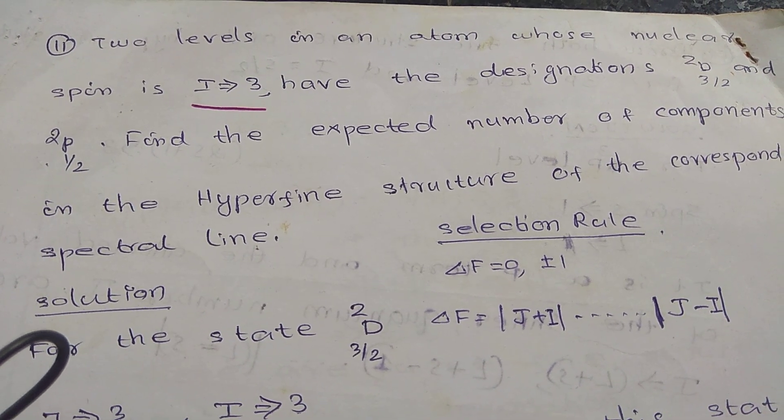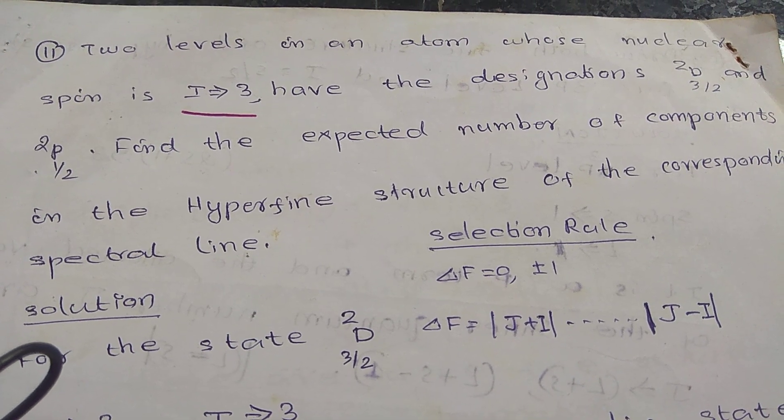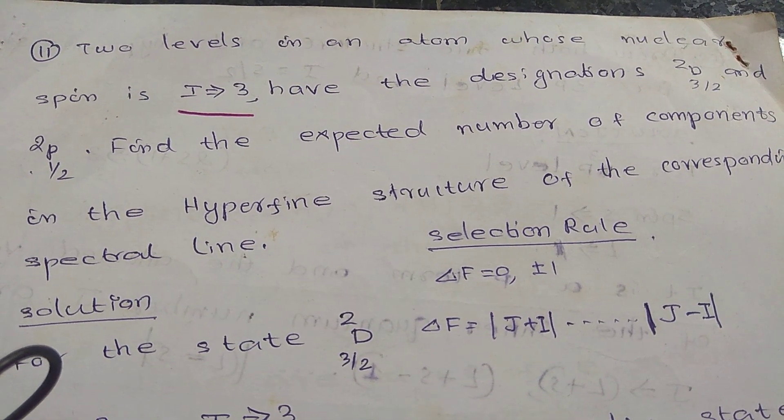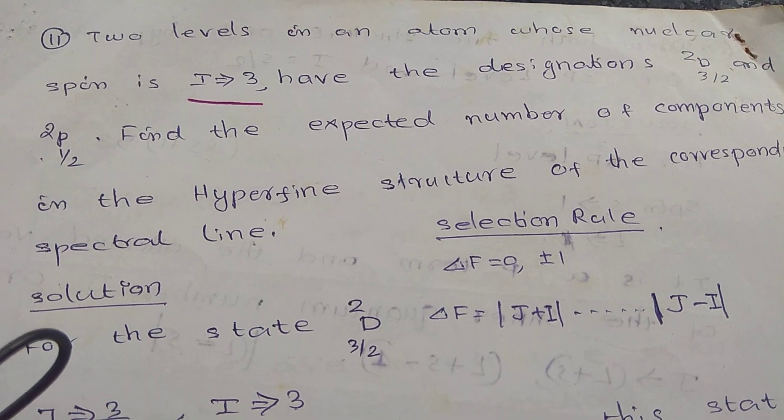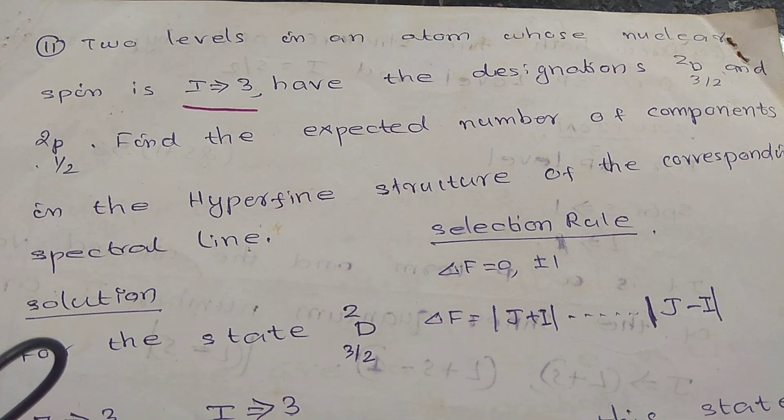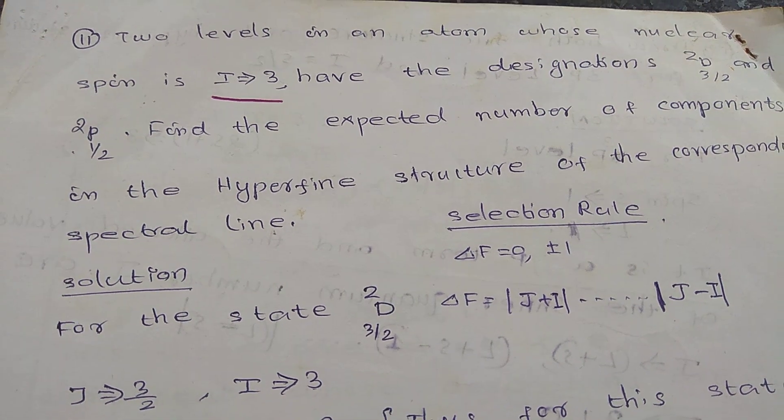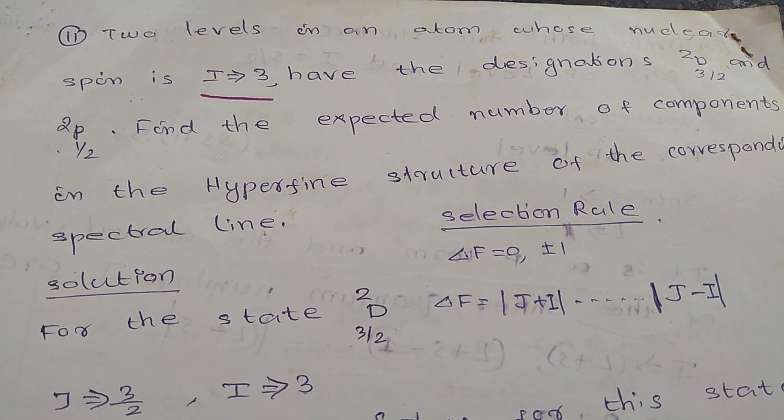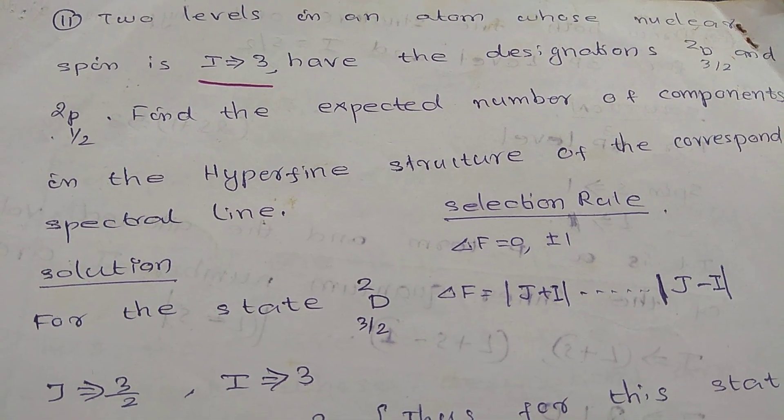These are very important problems corresponding to hyperfine structure. In this case we know that in hyperfine structure the selection rule is ΔF equals 0, plus or minus 1. So for the state, first of all we consider the state D₂³/₂.